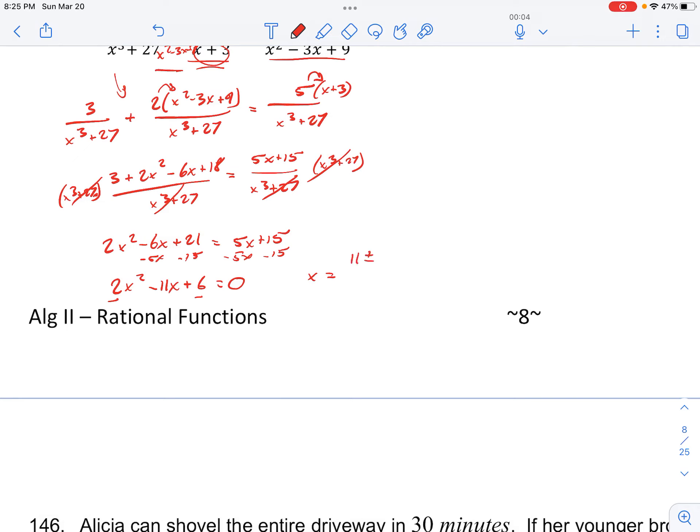So that's negative b, so that's negative 11, which is just 11, then plus or minus square root of negative 11 squared, which is 121, minus 4 times a, which is 2, times c, which is 6, over 2a, so that's 2 times 2, which is 4. So we get 11 plus or minus square root of 121 minus 4 times 2 is 8 times 6 is 48. So 121 minus 48 is just 73.